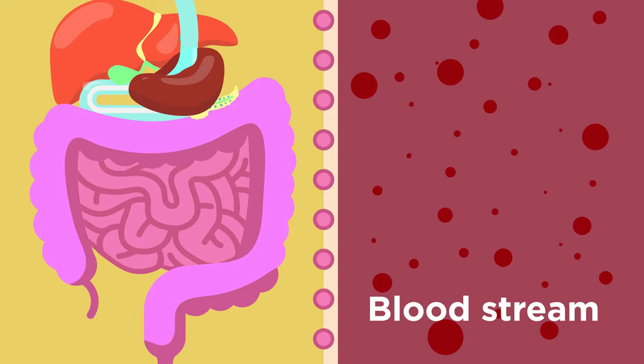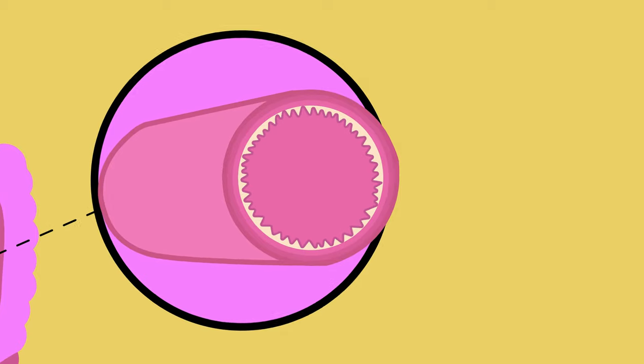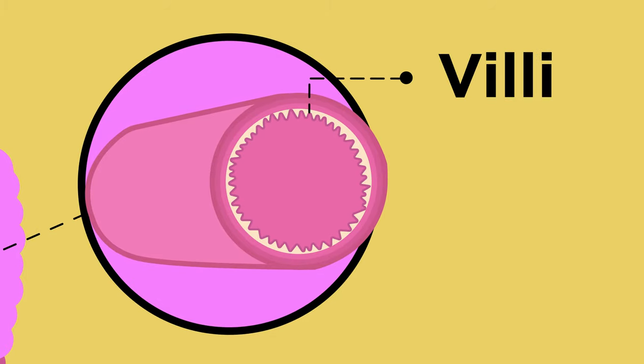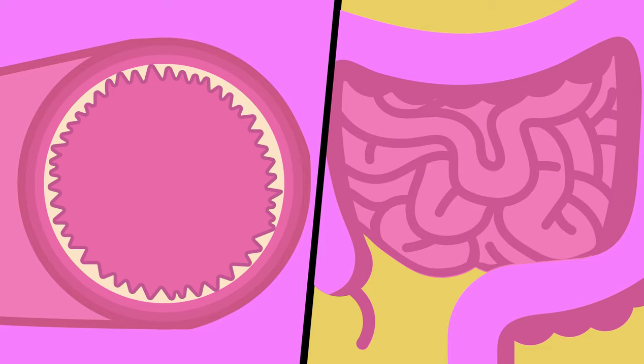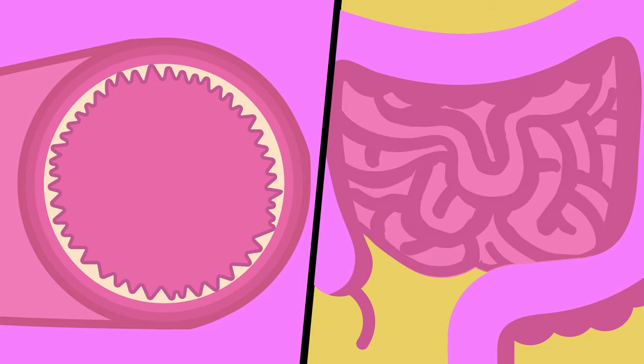The small intestine is made up of lots of tiny finger-like projections called villi. The villi increase the surface area of the small intestine. The larger the surface area, the more absorption that can take place.